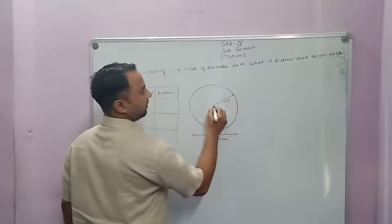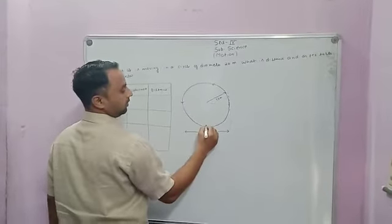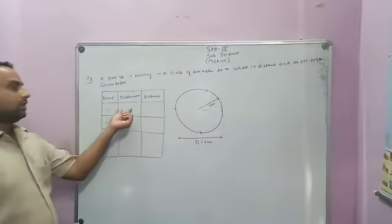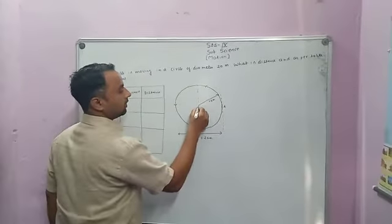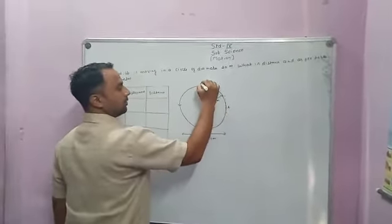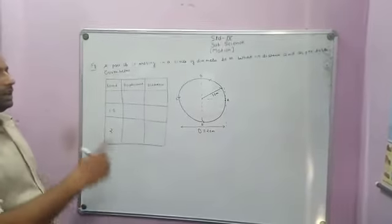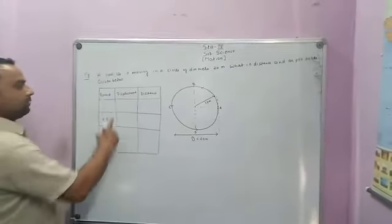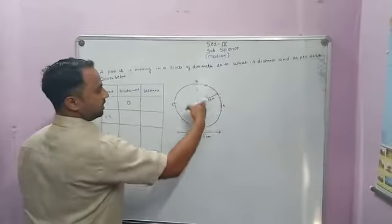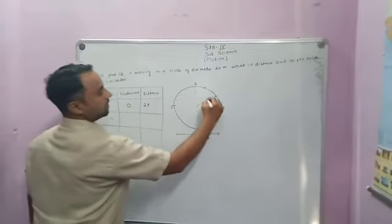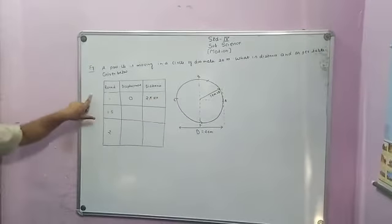Consider a particle starting at point A and moving along the circular path through points A to B, B to C, C to D, and D back to A. When one complete revolution is finished, the particle returns to the starting point. The displacement for one complete revolution is zero, because the initial and final positions are the same. The distance covered is 2πr, where r is 10 meters.